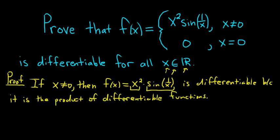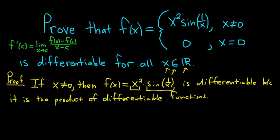The important part of this problem is to prove that it's differentiable at x equals 0. To do that, we'll use the definition of the derivative. Recall that f is differentiable at c, and we write that as f prime of c, if the following limit exists: the limit as x approaches c of f of x minus f of c, all divided by x minus c. That's the definition of the derivative. You can also use the alternate definition with x plus h, but let's use this one.